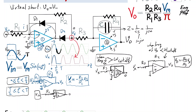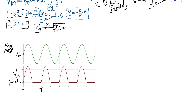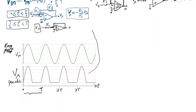Looking at what's coming into the second stage: VX is a periodic half-wave rectified signal. Since it's periodic, it has a Fourier series expansion. That series includes a DC component (constant term) plus multiple AC sinusoidal components.